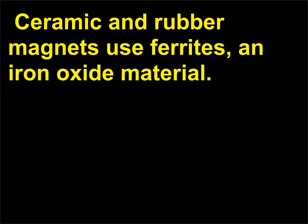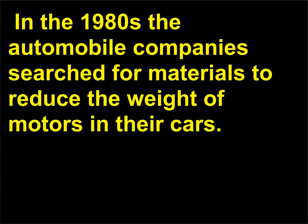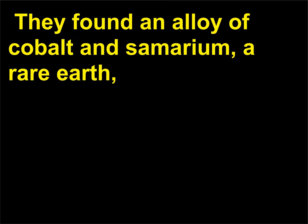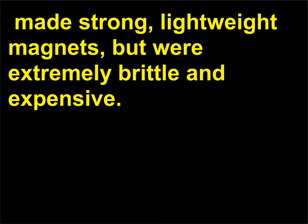Ceramic and rubber magnets use ferrites, an iron oxide material. In the 1980s the automobile companies searched for materials to reduce the weight of motors in their cars. They found an alloy of cobalt and samarium, a rare earth, that made strong, lightweight magnets, but they were extremely brittle and expensive.